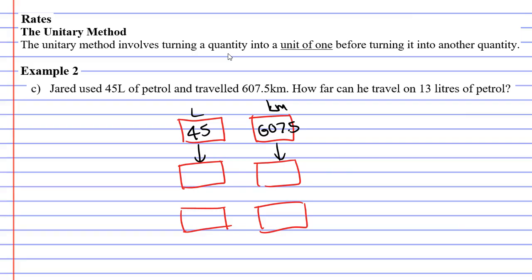So 45 litres of petrol and travelled 607.5 kilometres. How far can he travel on 13 litres? We're going to turn the 45 into 1 because the question wants you to find 13 litres. So we're going to focus on turning the litres into 1 and then converting the 1 into 13. 45 divide 45 gives us 1, so we must do that on both sides. 607.5 divide 45 gives me 13.5.